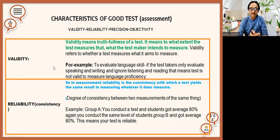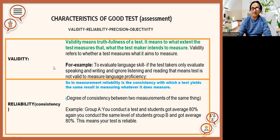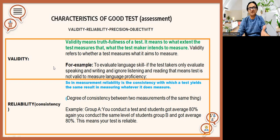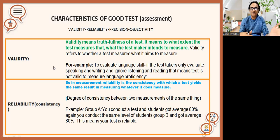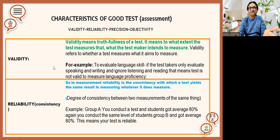Validity measures truthfulness — that is, to what extent a test measures what the test maker intends to measure. For example, suppose you are conducting a math test and you taught skill one, skill two, skill three — say fractions — but your test consists of trigonometry and algebra. That means the test is not valid for that group, because what you taught and what you aimed to measure are quite different. If the test measures exactly what you intended, we call it valid; if not, the test is not valid.